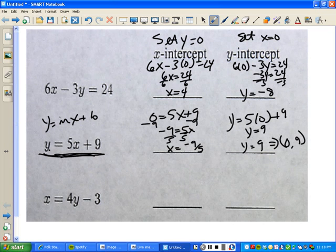Lastly, find the x intercept. Set y equal to 0. X equals 4 times 0 minus 3. So in this case, x equals negative 3.